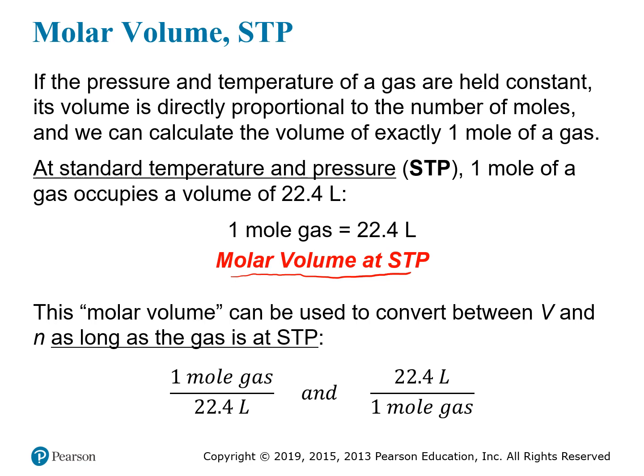This molar volume can be used to convert between the volume of gas you have and the number of particles, as long as you're dealing with a system at STP. We can develop two different conversion factors: one mole per 22.4 liters, or 22.4 liters per one mole.